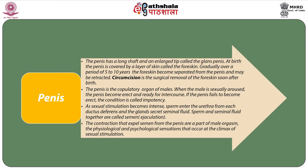The penis has a long shaft and an enlarged tip called the glans penis. At birth, the penis is covered by a layer of skin called the foreskin. Gradually, over a period of 5 to 10 years, the foreskin becomes separated from the penis and may be retracted. Circumcision is the surgical removal of the foreskin soon after birth. The penis is the copulatory organ of males. When the male is sexually aroused, the penis becomes erect and ready for intercourse. If the penis fails to become erect, the condition is called impotency. As sexual stimulation becomes intense, sperm enter the urethra from each ductus deferens and the glands secrete seminal fluid. Sperm and seminal fluid together are called the semen or the ejaculate. The contraction that expels semen from the penis is part of the male orgasm — the physiological and psychological sensations that occur at the climax of sexual stimulation.